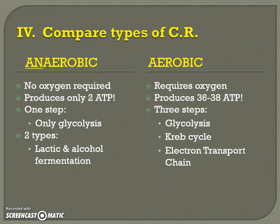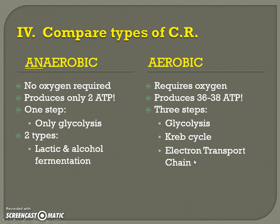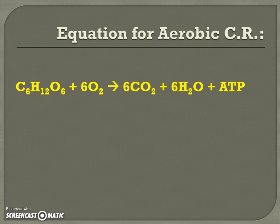Let's compare and summarize. Anaerobic: didn't have oxygen, only made two ATP, only had one step called glycolysis, but there were two major types — lactic acid and alcoholic fermentation. Lactic acid was for humans; alcohol was for yeast. Compared to aerobic, which requires oxygen, which made a total of 36 to 38 ATP — it's okay that this is a range. And there were three steps: glycolysis, Krebs, and the electron transport chain. Just remember that you have to memorize the aerobic cellular respiration equation, which is the one we're going to focus on because it's the one with oxygen. Make sure you know how to write it out and be able to identify it and make sure all the parts are in the right place. Great job, guys.